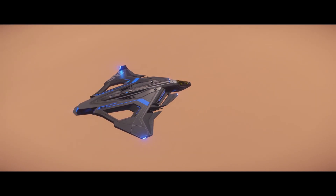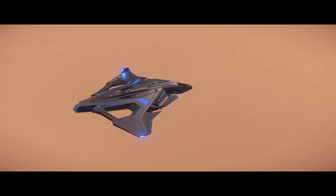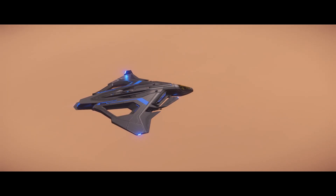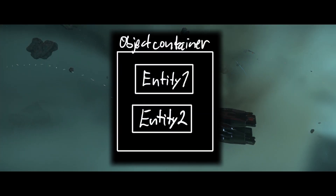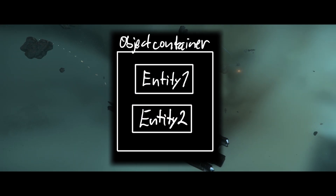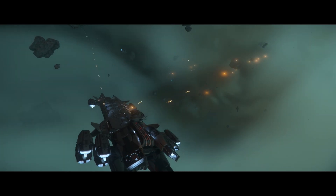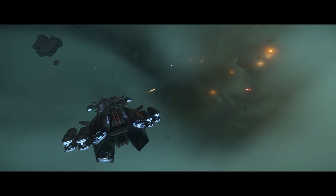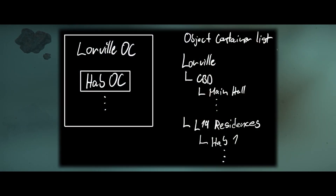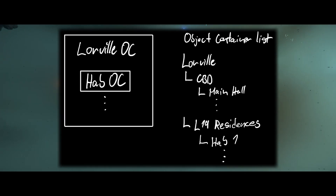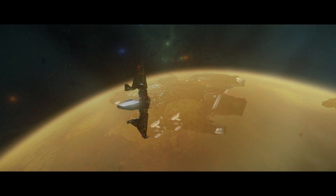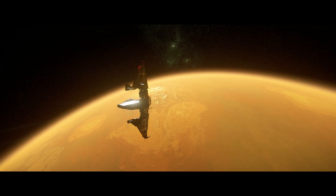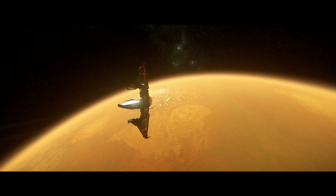In simple terms, object container streaming enables both the client and the server to dynamically load and unload entities as they are needed. In Star Citizen, entities are organized into structures called object containers, which is where the name comes from. Containers can have different sizes ranging from a room or ship to an entire city, and they can also be nested — for example, when you're in your hab in Loreville, the hab can be its own object container nested within the larger Loreville container.